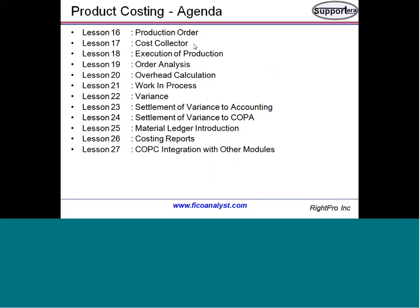There are a wide range of types of production we will see, and also the execution of production — how it is produced. We will do order analysis to see how the analytical portion looks after production. Overhead calculations will also be done as part of the month-end closing activity. We will also see work in process — why we need it and how it impacts the valuation of balance sheet items when something is not completely produced.